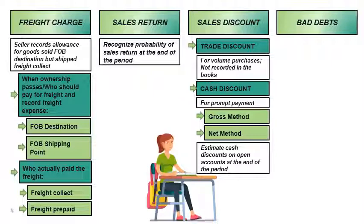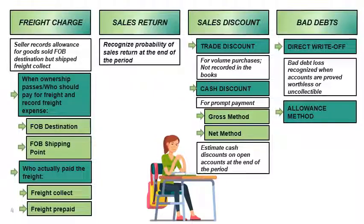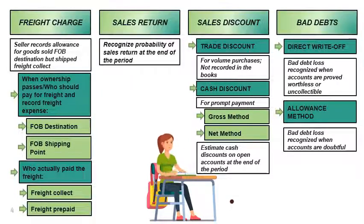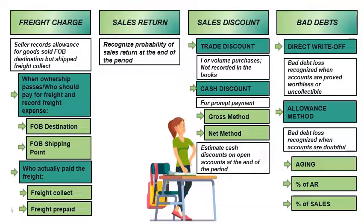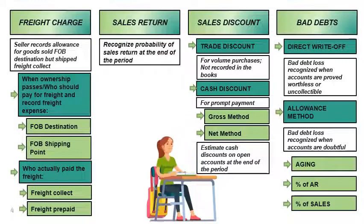Bad debts are accounted for using either the direct write-off method or allowance method. Direct write-off recognizes bad debt loss when accounts prove to be worthless or uncollectible. On the other hand, the allowance method records bad debt loss when accounts become doubtful. Under the allowance method, the three methods for estimating doubtful accounts are: aging, percentage of accounts receivable, and percentage of sales.